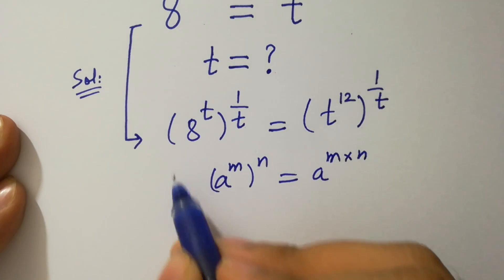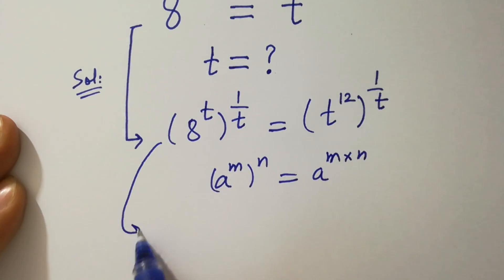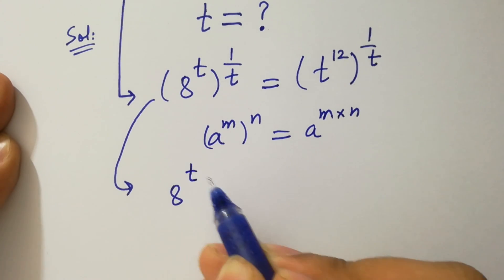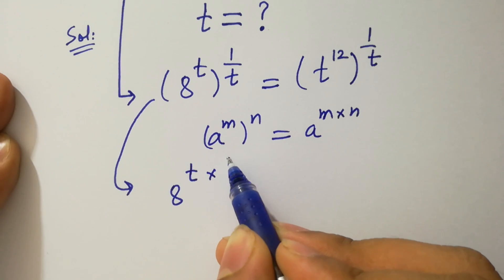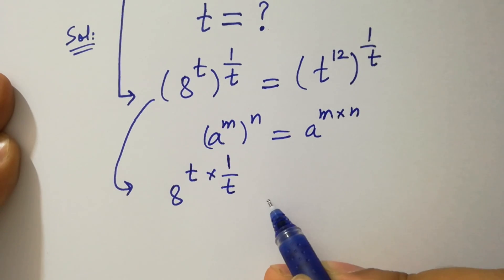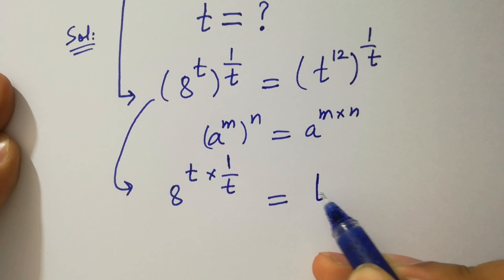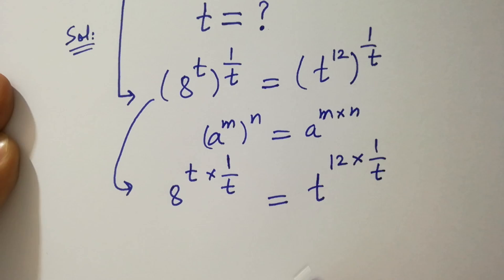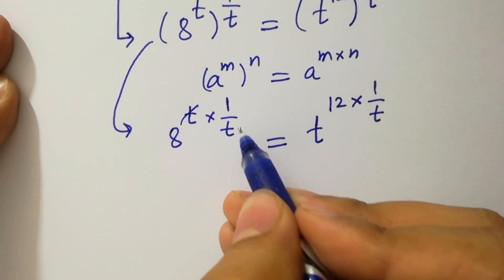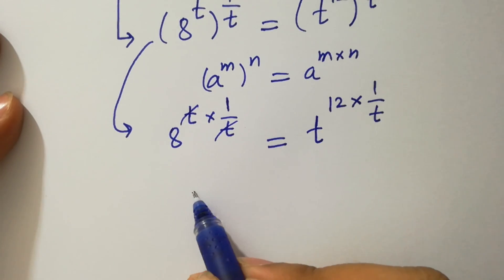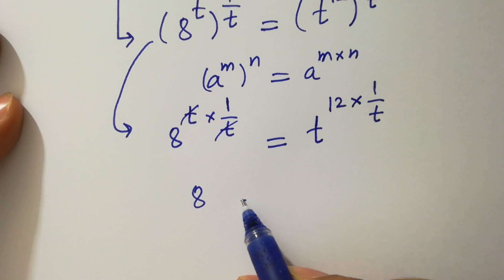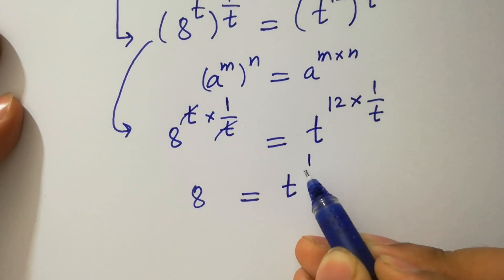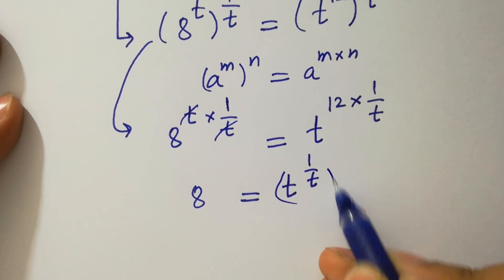Then it will be 8 to the power t times 1 over t, equal to t to the power 12 times 1 over t, where t and t cancel. So we get 8 equals t to the power 1 over t, to the whole power 12.